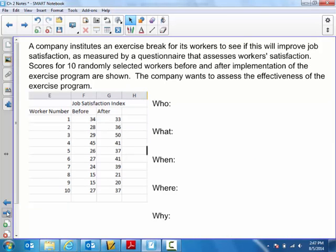Second problem here. A company institutes an exercise break for its workers to see if this will improve job satisfaction as measured by a questionnaire. Scores for 10 randomly selected workers before and after implementation of the exercise program are shown. The company wants to assess the effectiveness. Just like the last slide, we're going to establish context by looking at the five W's and how.